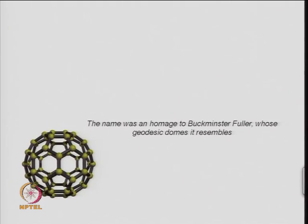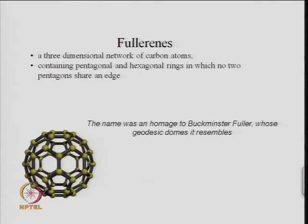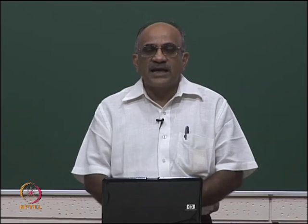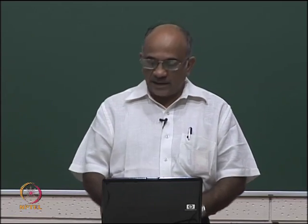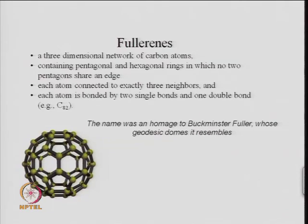This molecule is called fullerene after the name of Buckminster Fuller. Fullerenes have a three-dimensional network of carbon atoms; they contain pentagonal and hexagonal rings in which no two pentagons share an edge. Hexagons can share an edge with one pentagon, but two pentagons cannot share an edge. Each atom is connected to exactly three neighbors — three other carbon atoms — and each atom is bonded to two single bonds and one double bond.